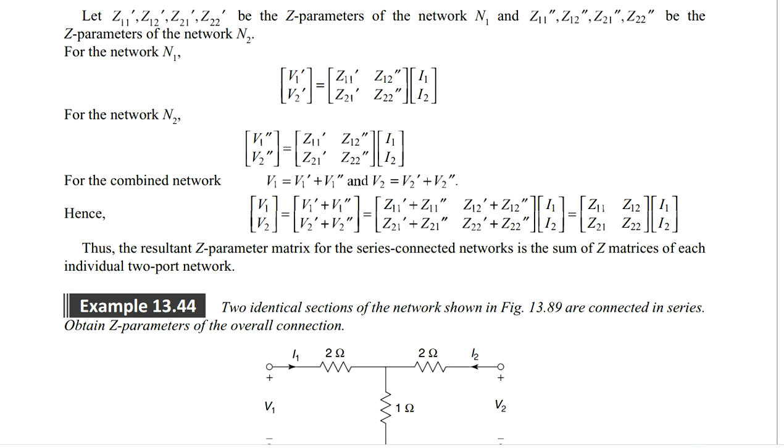same in series connection. With that you can get V1 V2 is equal to Z11, Z12, Z21, Z22, I1 I2, where the Z11 is the sum of the individual networks Z parameters. That is the important point here.